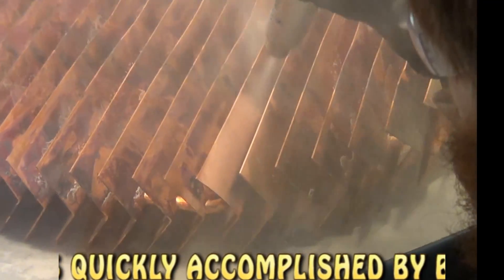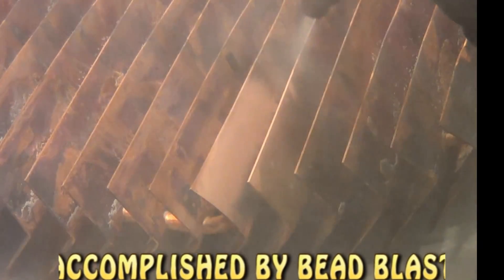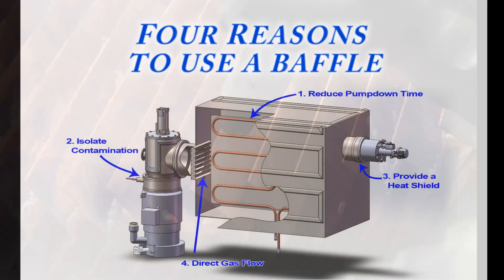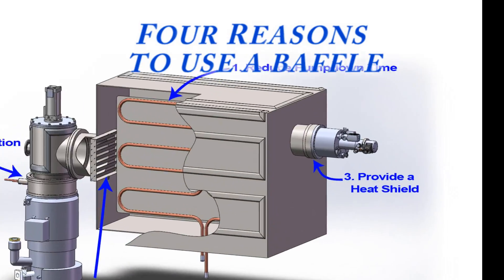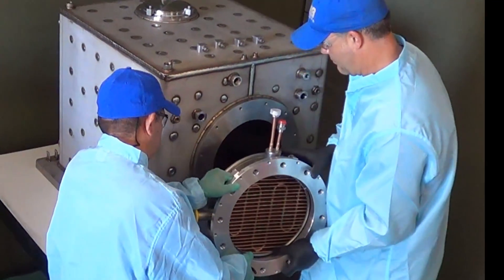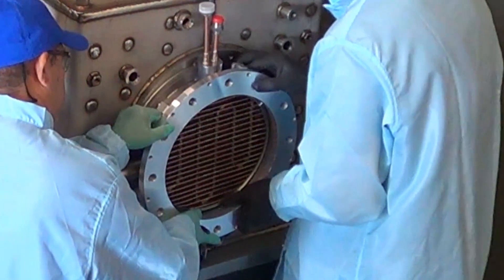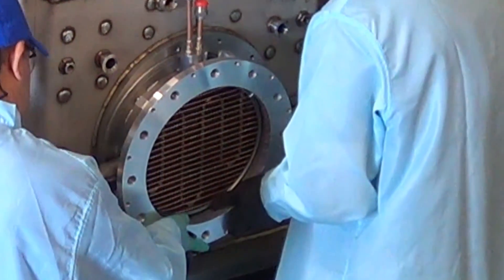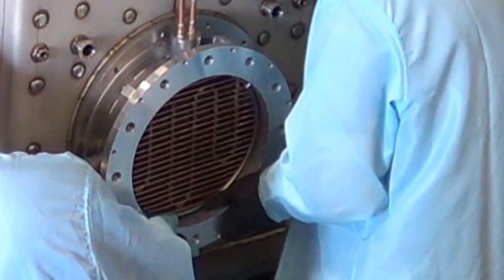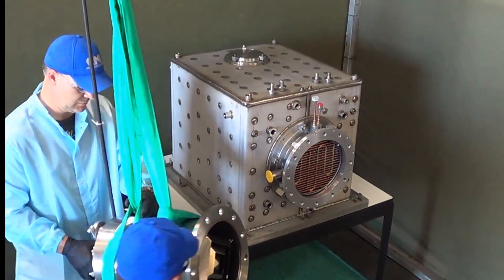The third common use of a baffle is to provide a heat shield. Many vacuum components such as cryo pumps do not work effectively when exposed to the high temperatures commonly found in vacuum processes. A chilled baffle placed in front of a cryo pump will block radiation and allow the pump to work efficiently.